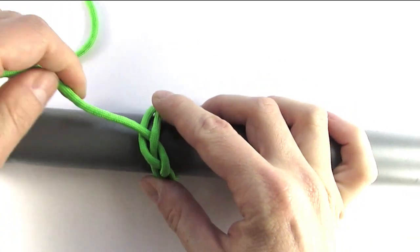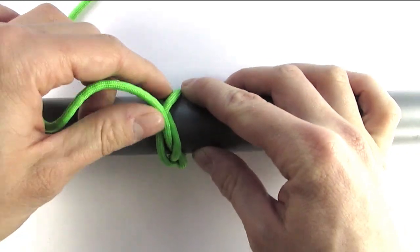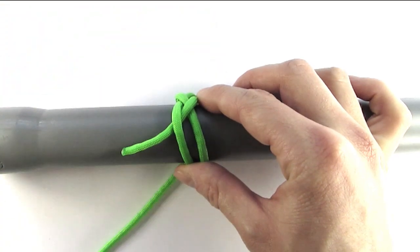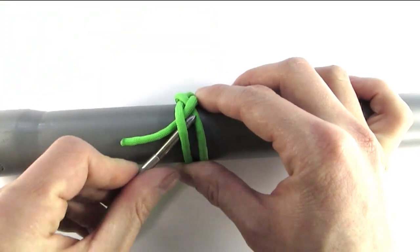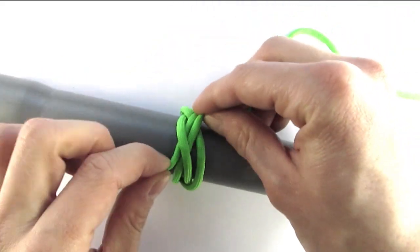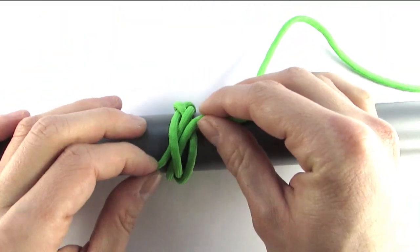Now we're going to find our standing end and insert our working end next to it. This completes the three-part turk's head, which we're going to interweave to get our Spanish ring knot.